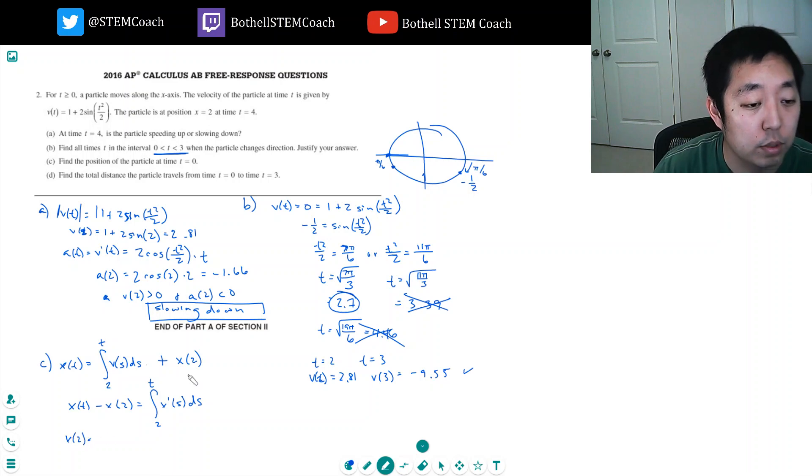So x(0) is equal to integral from 2 to 0 of 1 plus 2 sine t squared over 2 dt, plus x(2). The particle at time t equals 4. I was mixing up, so this all has to be 4, 4 down here. And then x(4) is 2. So I need to use a calculator to compute this integral here.